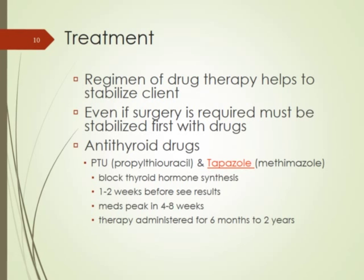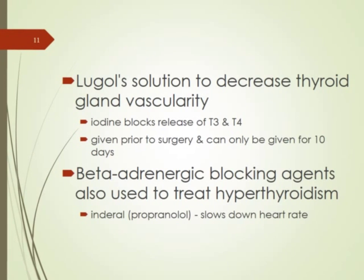Lugol's solution decreases the vascularity of the thyroid gland and prevents release of T3 and T4 — it acts as a blocker. Methimazole and Lugol's solution are given for extreme cases of hyperthyroid and also prior to surgery to stabilize the patient, since hyperthyroid patients have abnormal, elevated vital signs. Inderal (propranolol), a beta blocker, is given to slow down the heart rate and bring down blood pressure simultaneously.